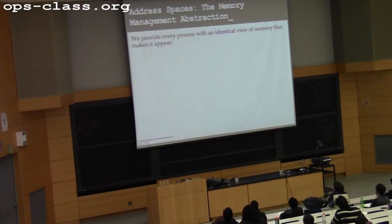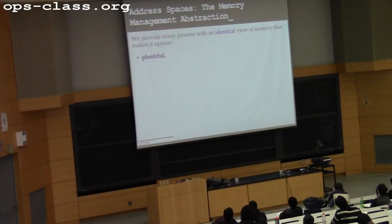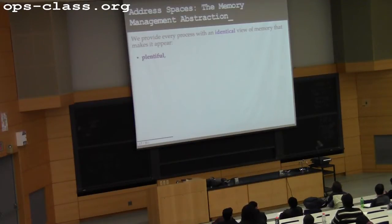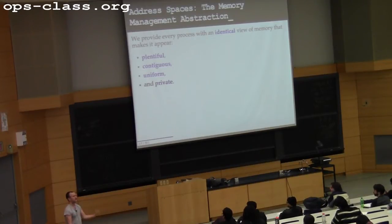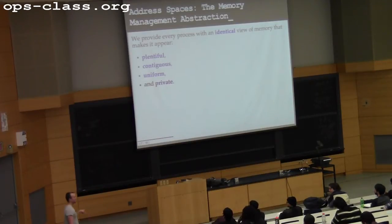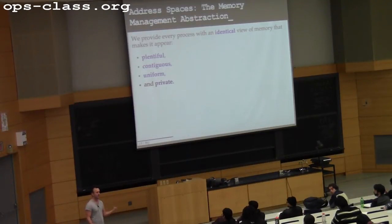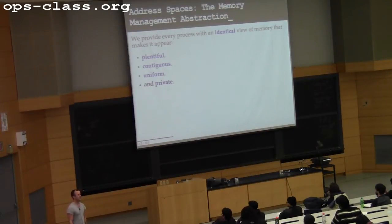We introduced the memory management abstraction, which is the address space. An address space allows each process to have an identical view of memory every time it runs. We make it look like the process has a lot of memory — potentially more memory than exists on the system, always potentially way more than I've actually allocated to the process. That memory is contiguous, so the address space consists of a continuous range of addresses. The memory is uniform and private — uniform means things next to each other behave like they're next to each other, and private means memory allocated to a process is private to that process and the threads that run inside it.